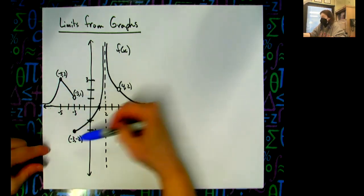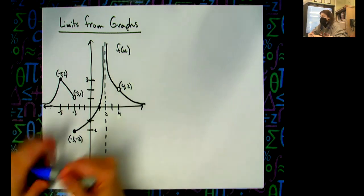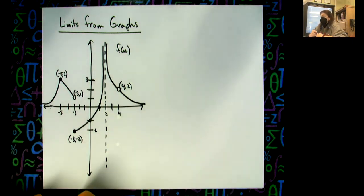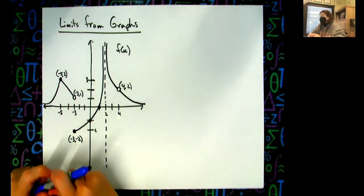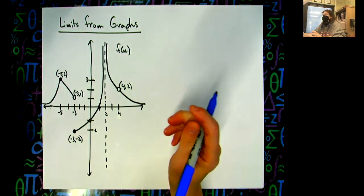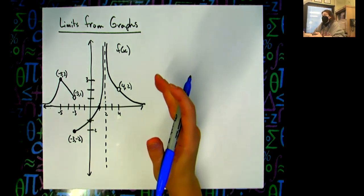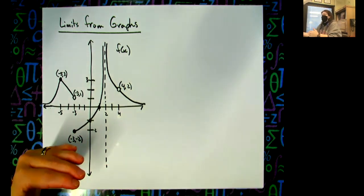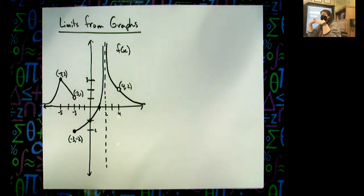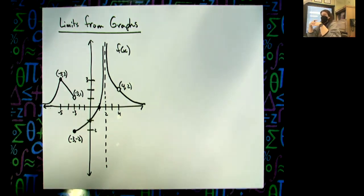Now, yesterday, hopefully you got the idea that the limit coming from the left and the limit coming from the right must be the same number for the overall limit to exist. So the notation that you hopefully saw yesterday...